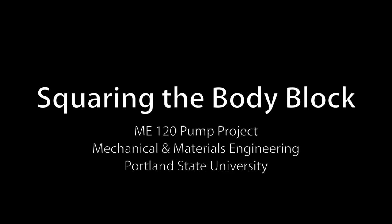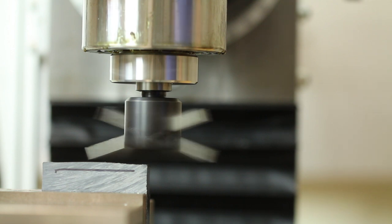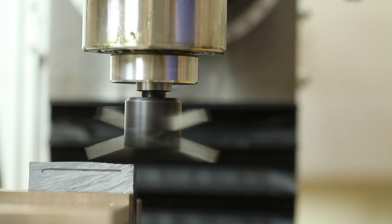This video demonstrates how to create flat parallel faces on the plastic block that will become the pump body. We'll use a fly cutter to trim uneven material so that the plastic block can be securely held in the machining vise.